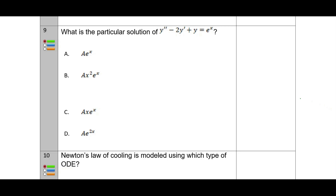Question nine: what is the particular solution for the given equation? The homogeneous part involves e^x. When e^x appears in the homogeneous solution, we must use a modified particular solution. The correct option is C — the particular solution is Ax·e^x, which accounts for e^x already being part of the homogeneous solution.